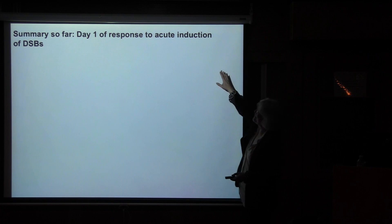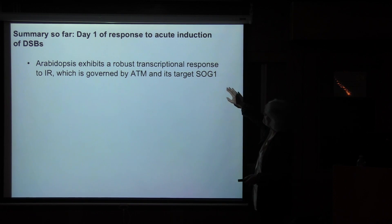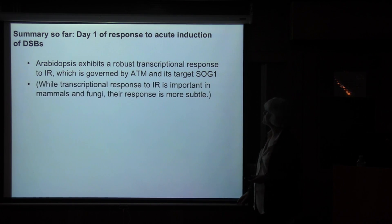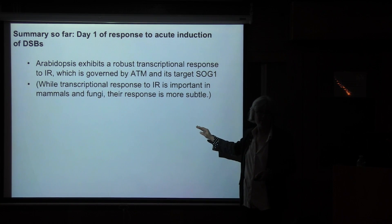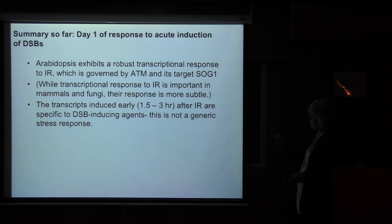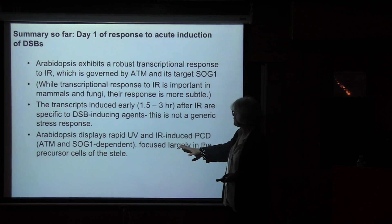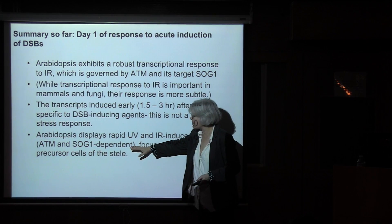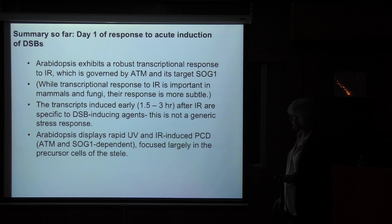To summarize: we're looking at the immediate actual response to double-strand breaks. Arabidopsis has a robust, very reproducible transcriptional response to ionizing radiation governed by ATM and SOG1. The transcriptional response to IR is important in mammals and fungi — P53 is a transcription factor but is nowhere near this amplitude or reproducibility. The transcription programs induced early after IR are DSB-specific, and Arabidopsis induces a programmed cell death response that is also ATM and SOG1-dependent, focused largely in the precursor cells of the stele.